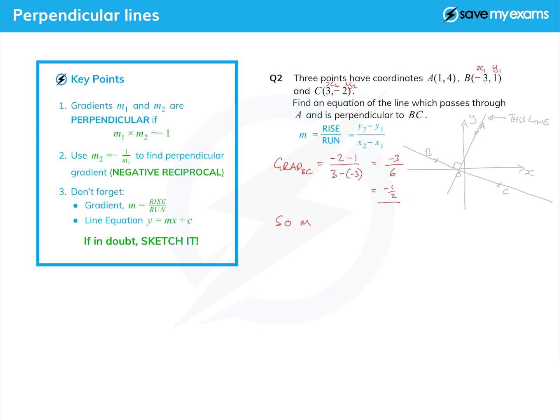So the m we want, the gradient we want, is of course 2. How have I done that so quickly? Well I've just remembered that the two things must multiply together to give minus 1 if they are perpendicular. So the only working I need to do there is to say since 2 times minus a half equals minus 1. So the equation of the line is y equals 2x plus c.